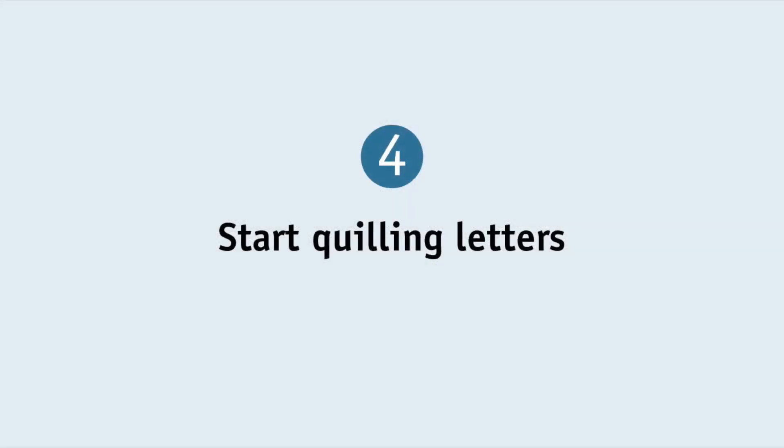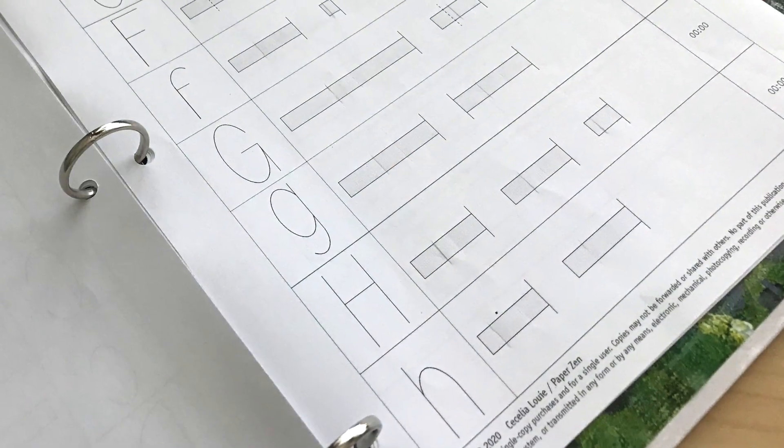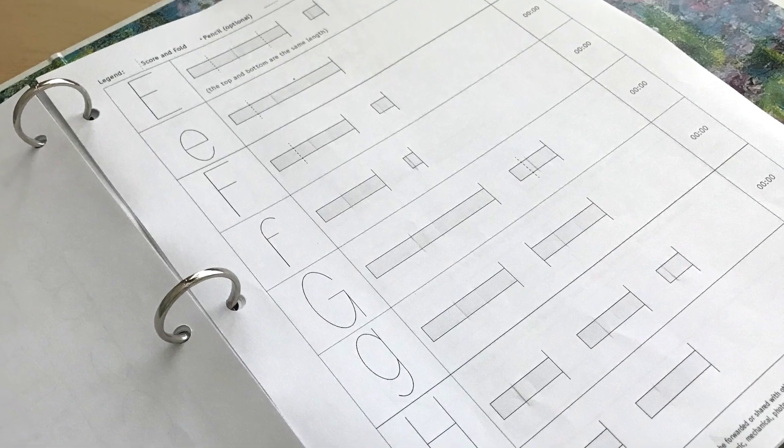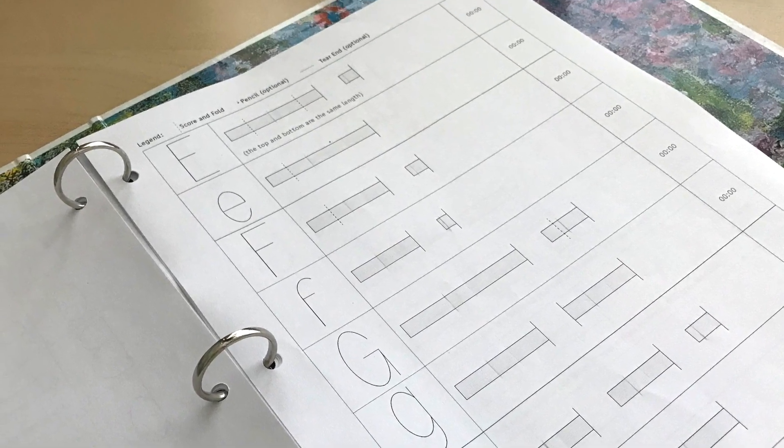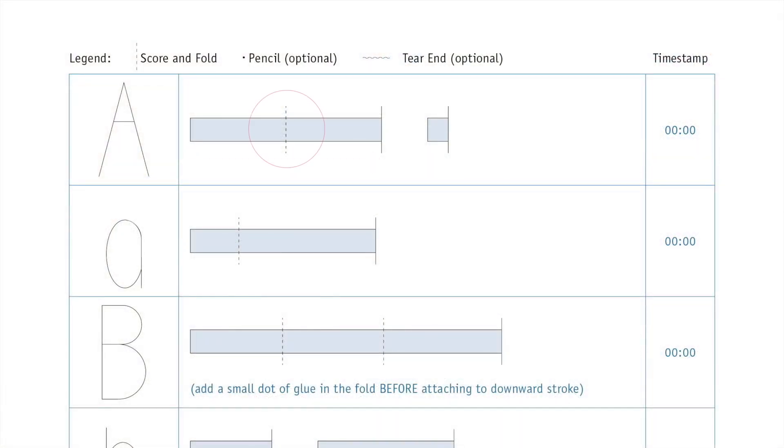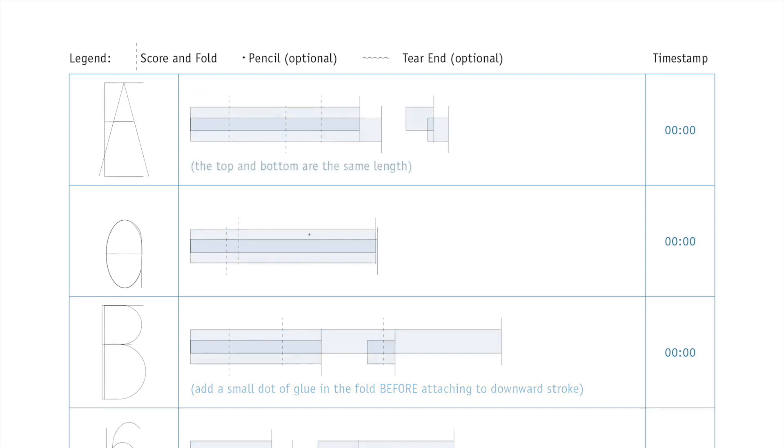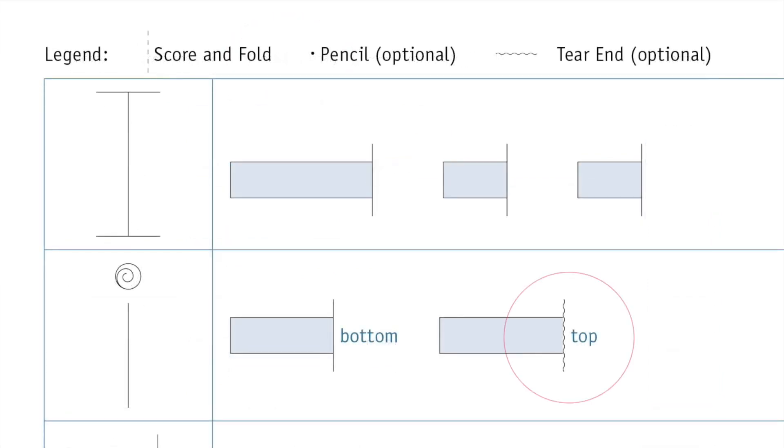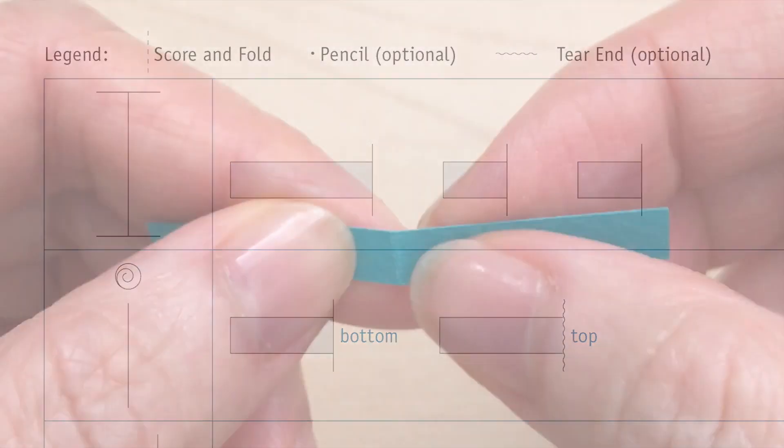Step 4: start quilling letters. After printing the letter patterns I hole punch the pages and store them in a binder to keep them in alphabetical order. Count all the letters needed for your phrase and prepare all the strips required. My pattern shows you the length of every segment. If you see a dotted line it means to score along the dotted line and fold. If you see a dot it means to make a light pencil mark on your strip. If you see a wiggly line it means tear the end because the paper I'm using is rather thick and tearing will make the join less noticeable.